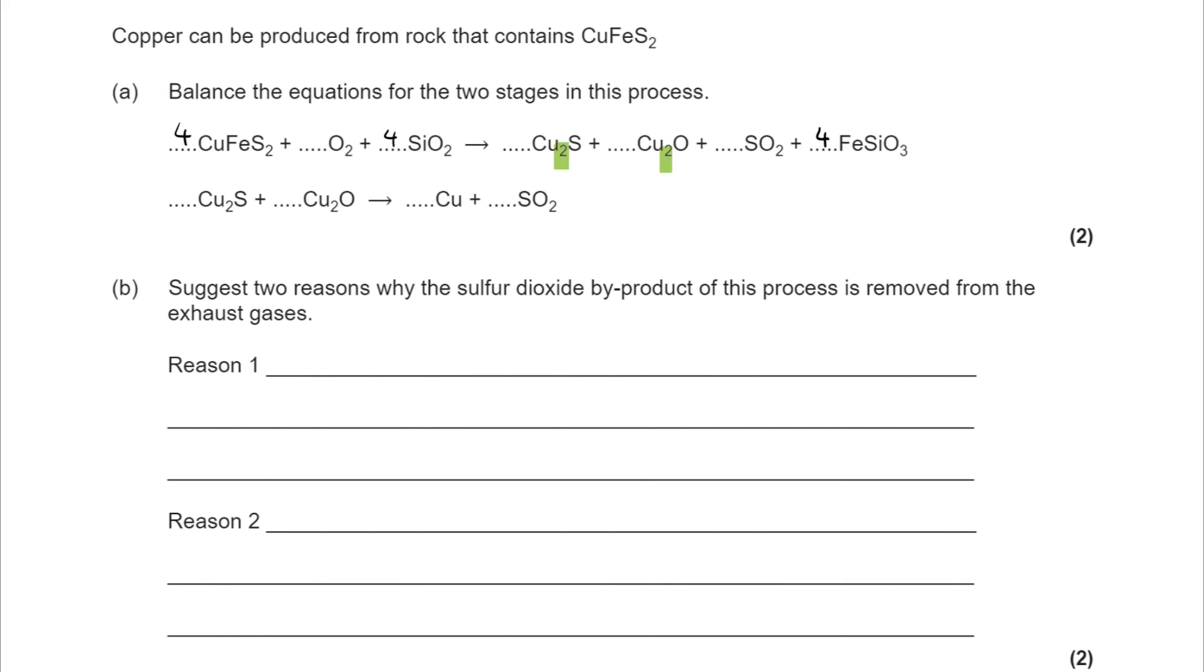Now I can then look at my sulfurs. I've got four times two in CuFeS2, eight sulfurs. But I've also got a Cu2S, so I need seven SO2 to balance them.